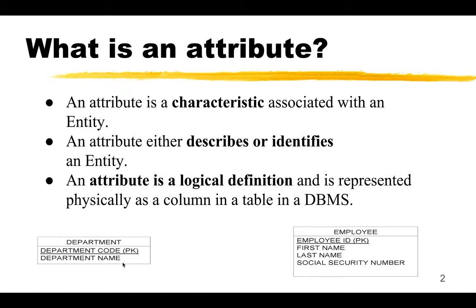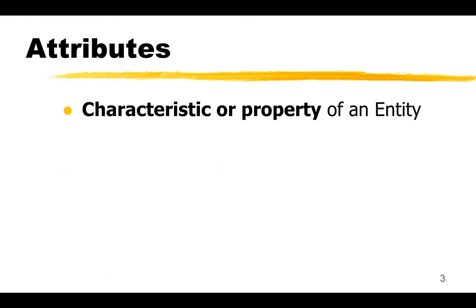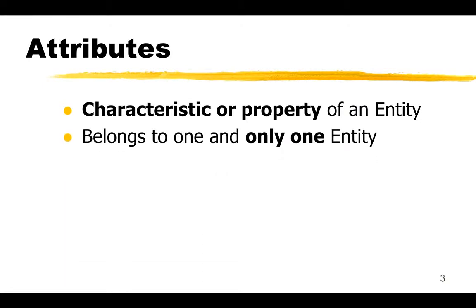what types of things it does and authorizations. So you can see these are two different entities — department and employee — and they have different attributes that are characteristics of them, or that describe or identify each entity.